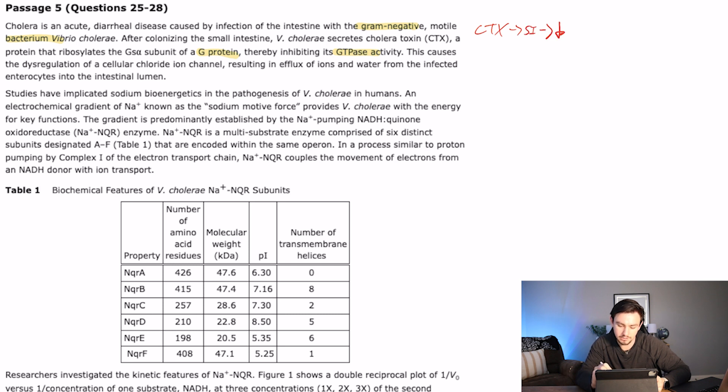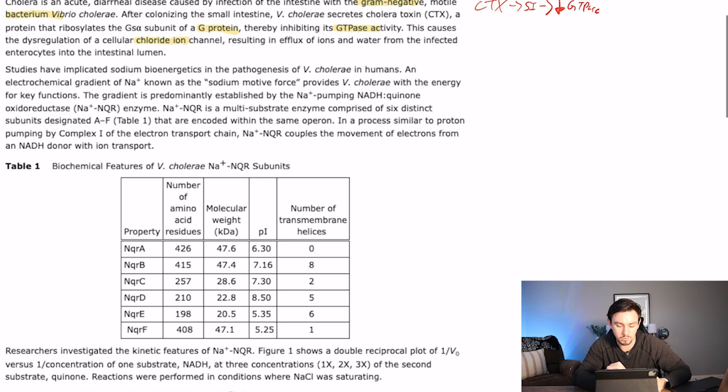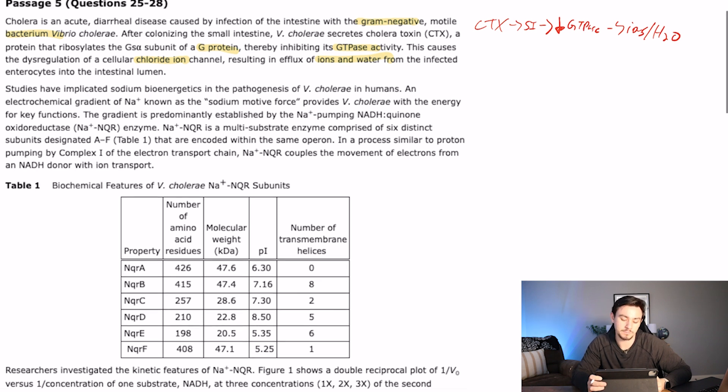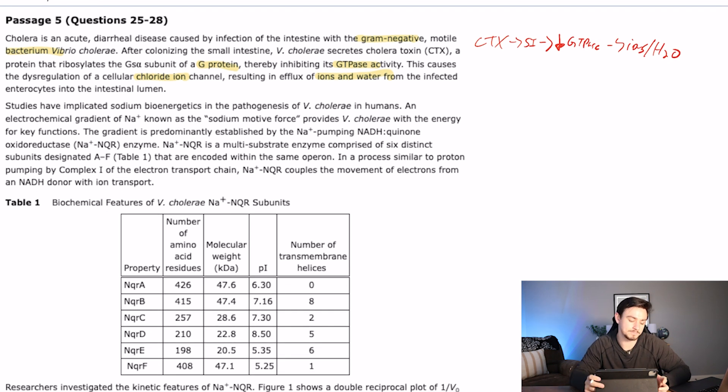Leads to a decrease or inhibits the activity of GTPase. And reading on it says that causes a dysregulation in the chloride ion channel, resulting in efflux of ions and water from the infective enterocytes into the intestinal lumen. So you get ions in water, and one thing that you'll learn in your GI block is where ions go, water follows, which equals diarrhea. So that's kind of how you get diarrhea from cholera.